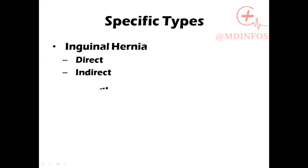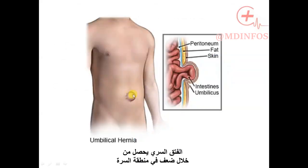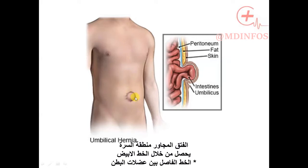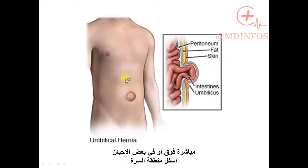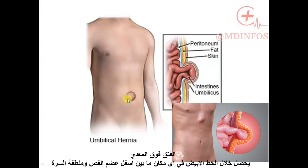The femoral hernia is a protrusion through the femoral canal. The umbilical hernia occurs through a weakness in the umbilicus, and the paraumbilical hernia occurs through the linea alba just above or sometimes below the umbilicus but not through the umbilical scar. The epigastric hernia occurs through the linea alba anywhere between the xiphoid process and the umbilicus.